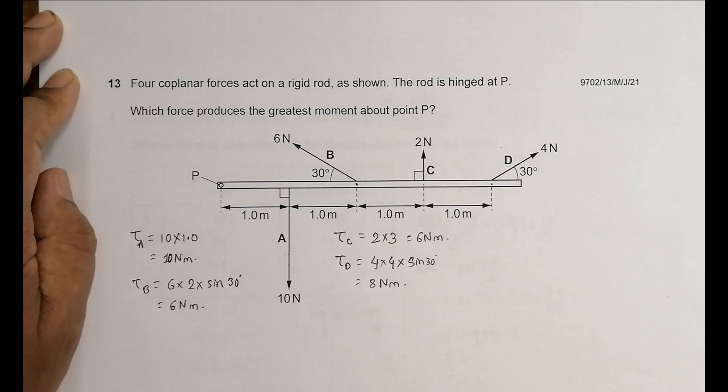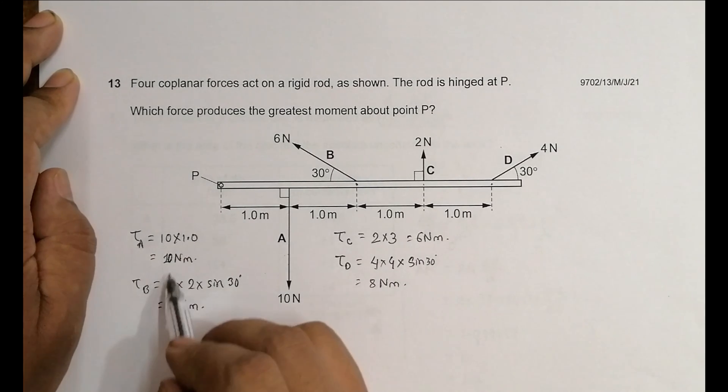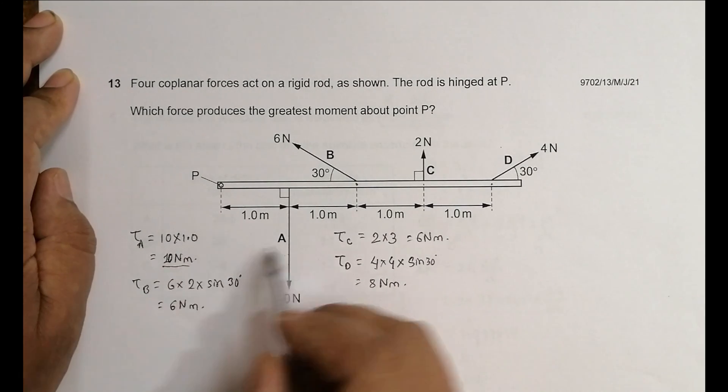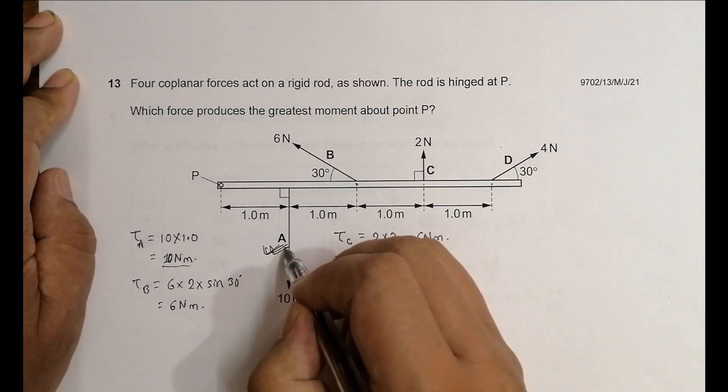So by going through all the choices, this is the correct choice. Choice number A should be the correct answer for this greatest moment.